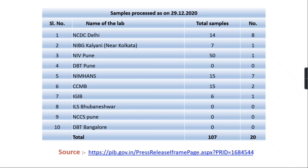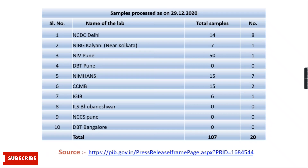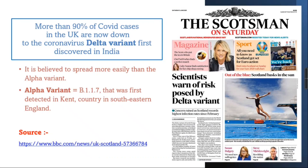In total, from 107 samples procured, only 20 were detected with the Delta variant. This data was processed on 29th December 2020 and collected from PIB government.in — the website link is provided so you can check it out. More than 90% of COVID cases in the UK are registered under this coronavirus variant which was first discovered in India.